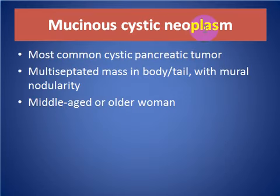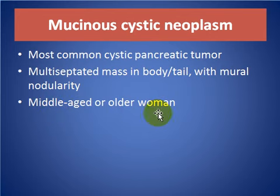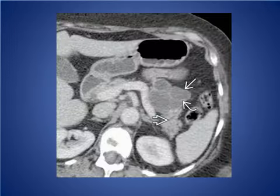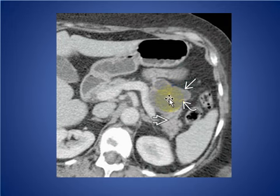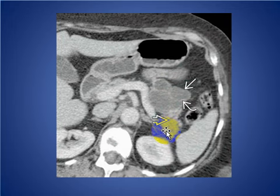Mucinous cystic neoplasm: the most common cystic pancreatic tumor — a multiloculated mass in the body or tail with mural nodularity, typically in middle-aged or older women. Here we see a cystic mass lesion with a large cyst in the tail of the pancreas, with septation, enhancing septation, and minimal dilatation of the upstream pancreatic duct with no pancreatic atrophy noted.